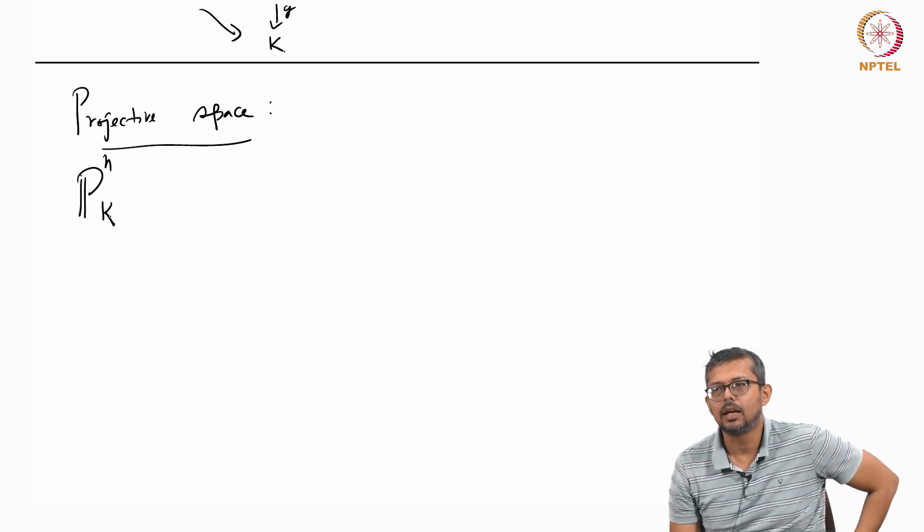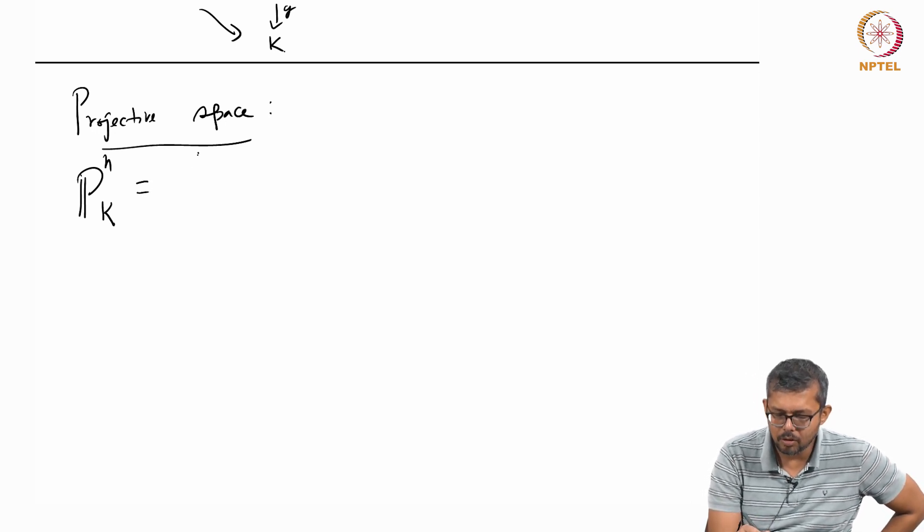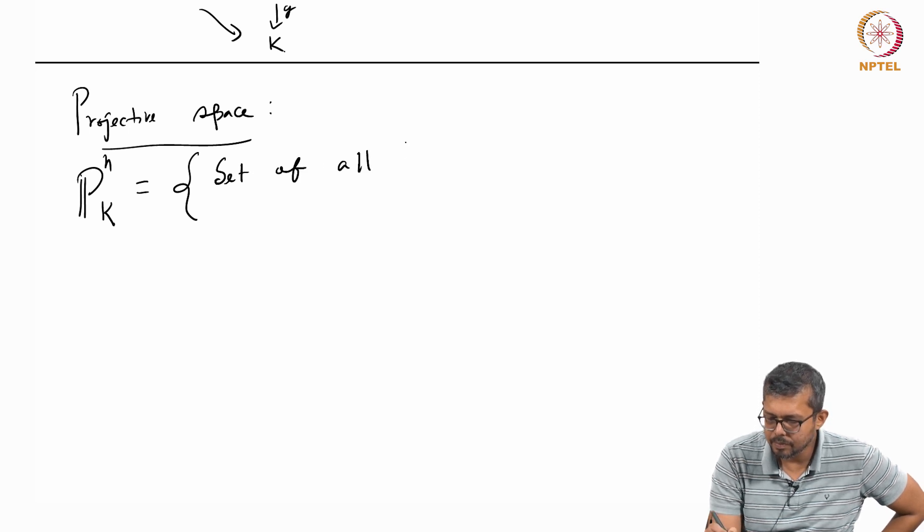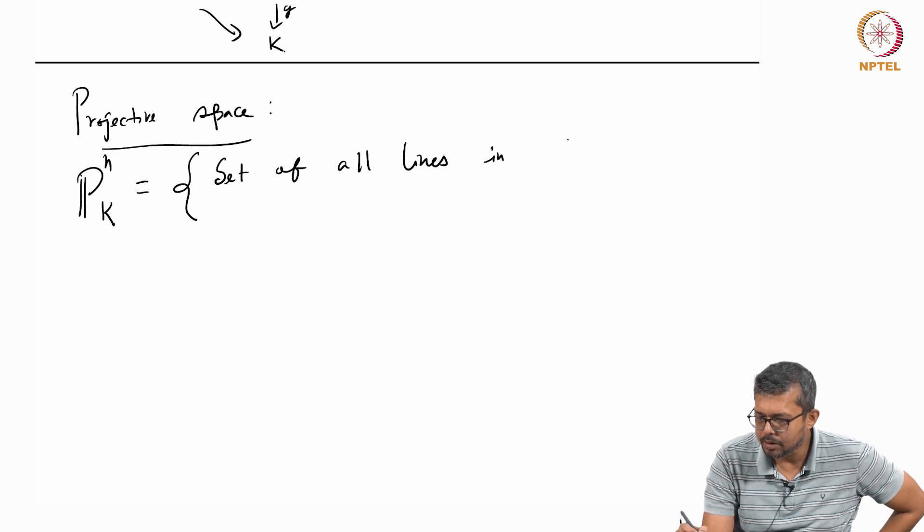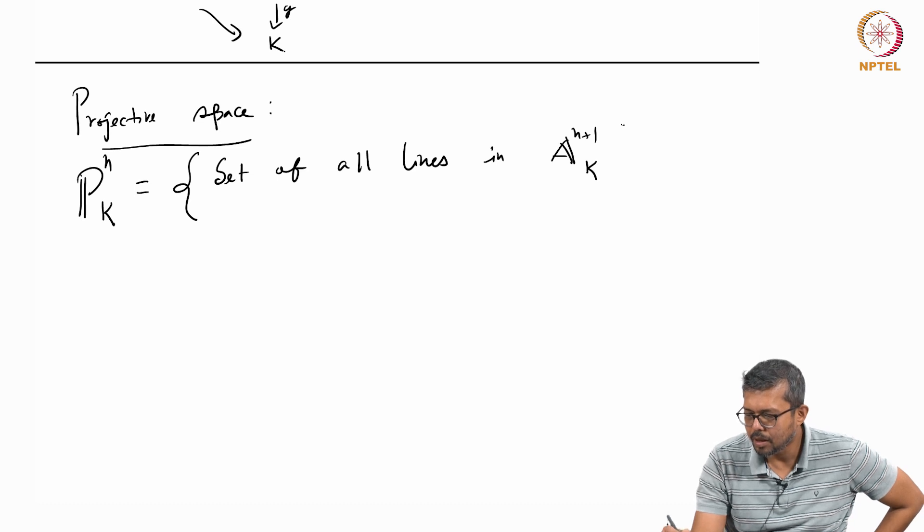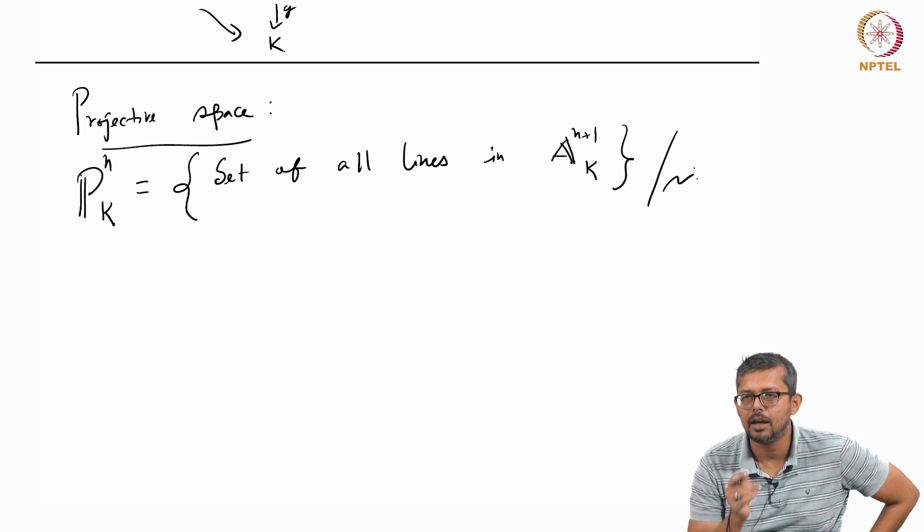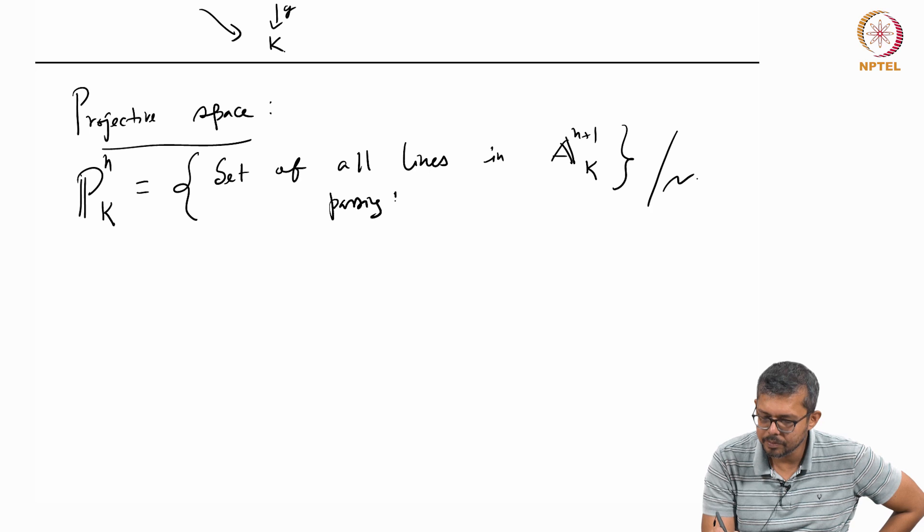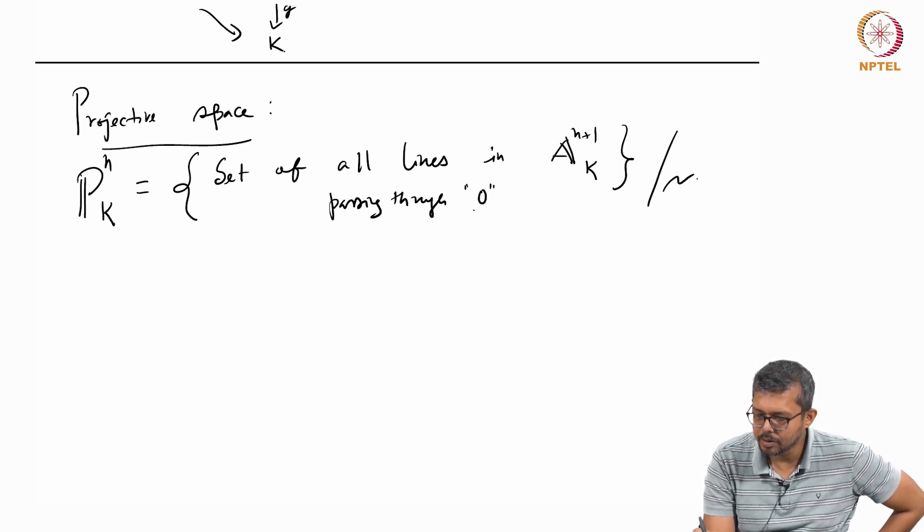We consider P^n_K. This P^n_K is, we consider the set of all lines on A^{n+1}_K with some equivalence. As a set, set theoretically I am first defining. The equivalence relation is passing through origin.